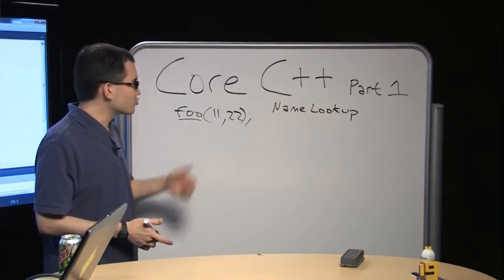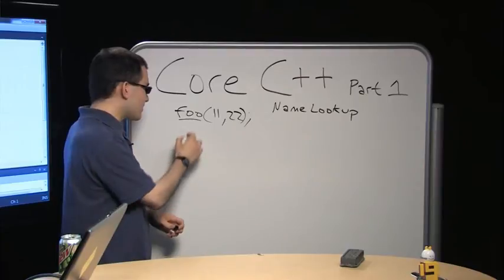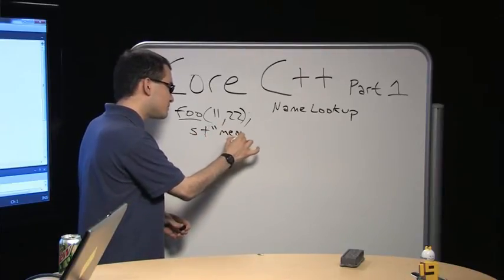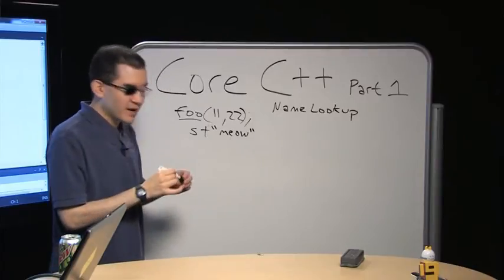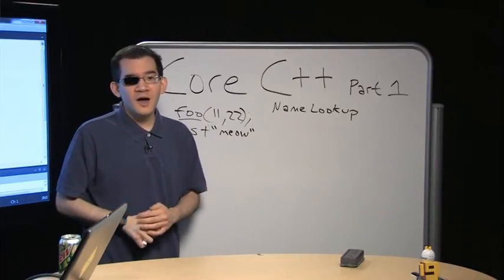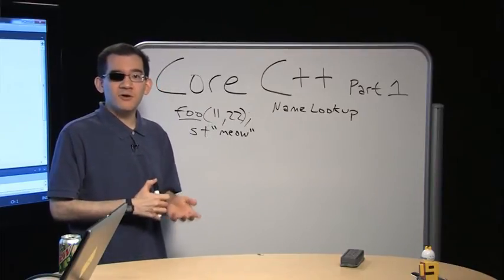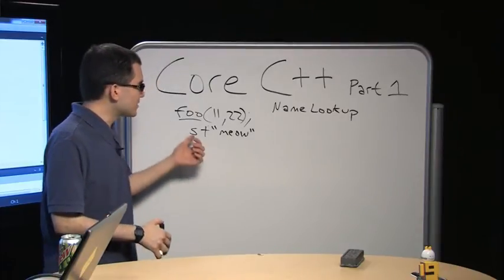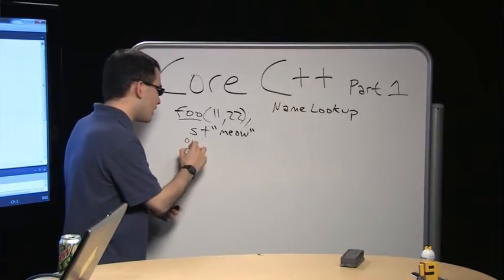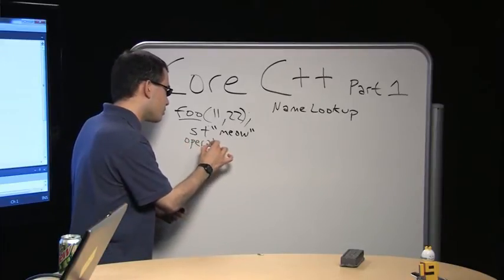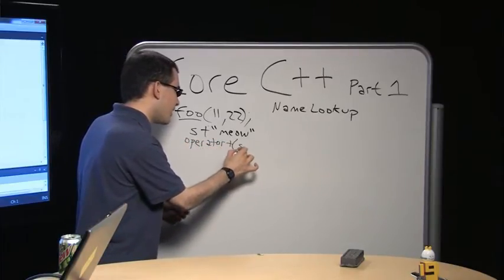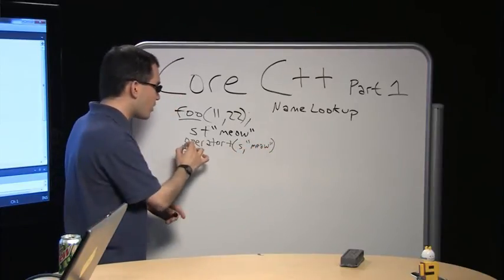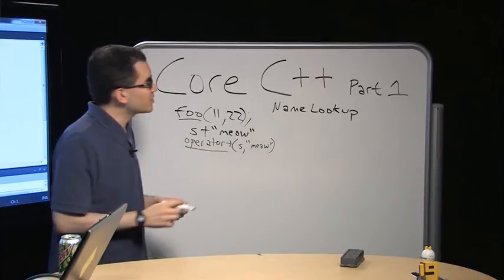This is also true in the case of operator overloading. If I say something like s plus meow, this is an overloaded operator on std::string. The way C++ does operator overloading is that it's just pretty syntax for an ordinary function call — it's another way of writing operator+(s, meow). So it still has to do name lookup to figure out where this operator+ lives.